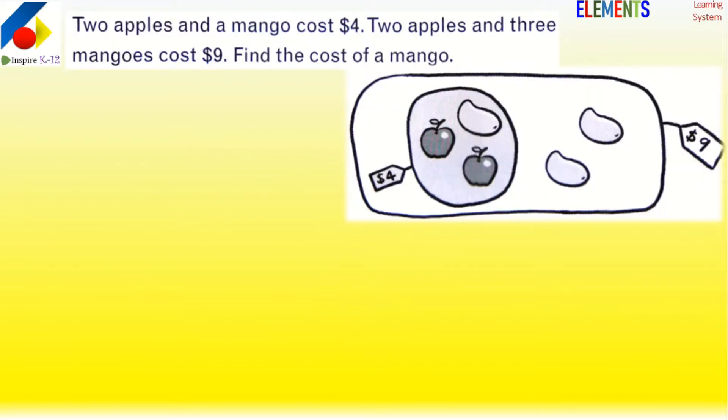For example, this is a very interesting problem. Two apples and a mango cost $4. Two apples and three mangoes cost $9. This is a very tricky question, but if we represent it step by step, it makes it so easy and fun.